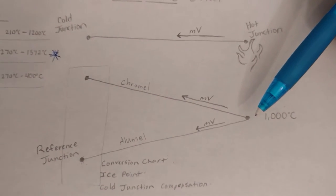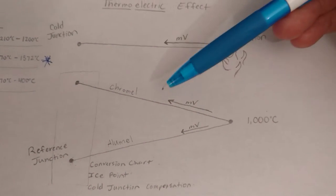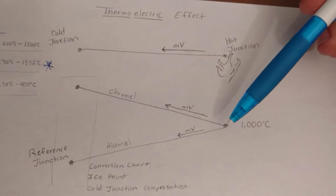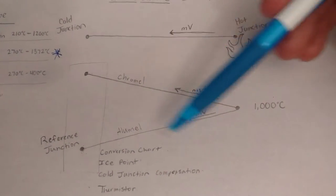Here's the thermocouple. We have two dissimilar wires that are coupled together. And in this instance, we're using a Type K.